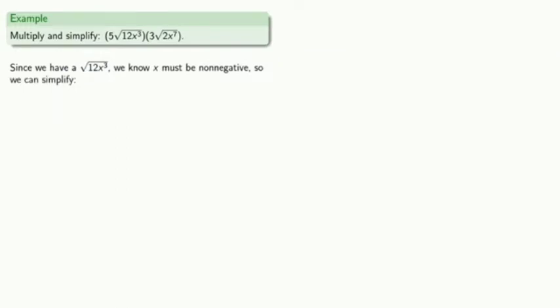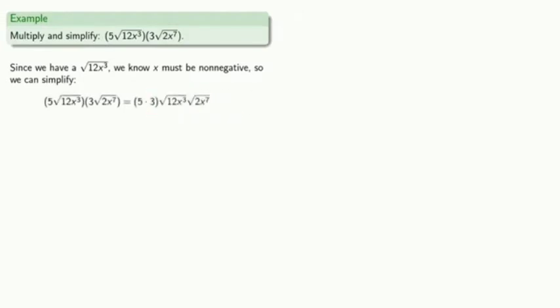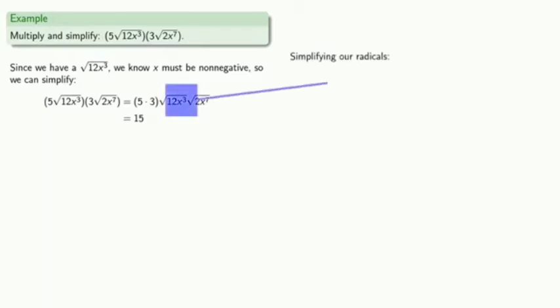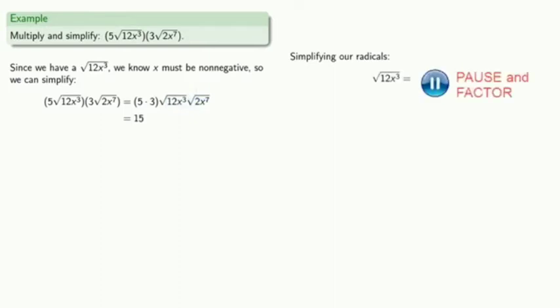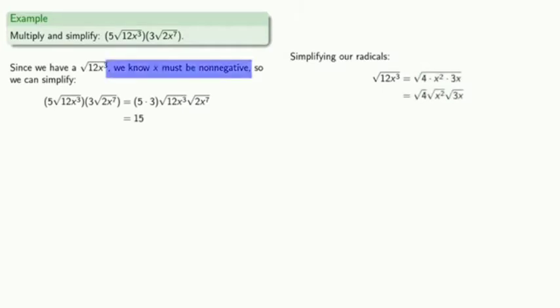We'll rearrange our factors. Let's multiply 5 times 3 outside the radical. We can simplify before or after we multiply, but it might be easier to simplify first so that we're dealing with smaller things. So let's simplify the square root of 12x cubed first by removing perfect square factors. Since x must be non-negative, we can say that the square root of x squared is equal to x, and we can simplify our square roots.